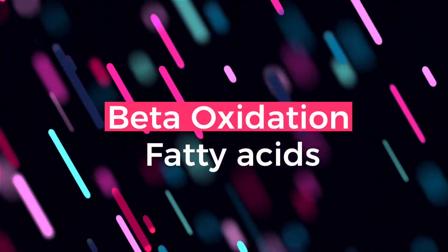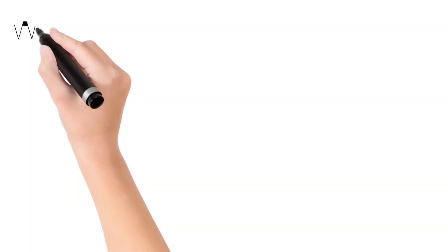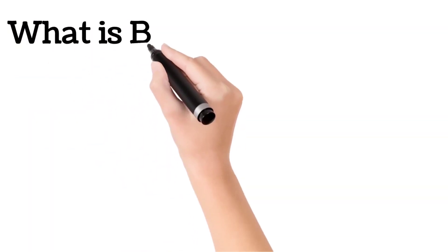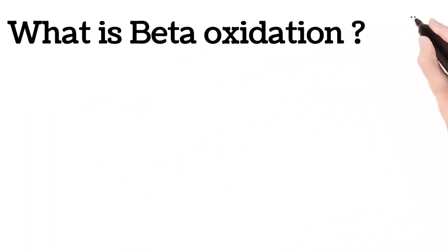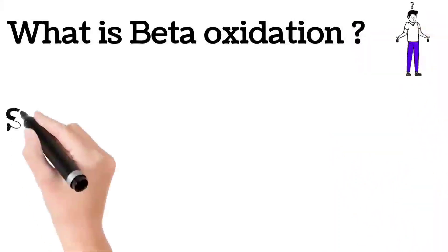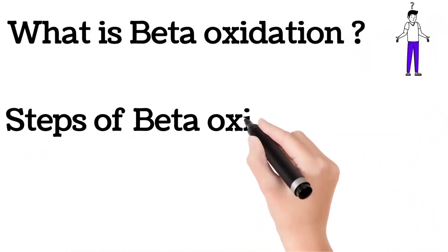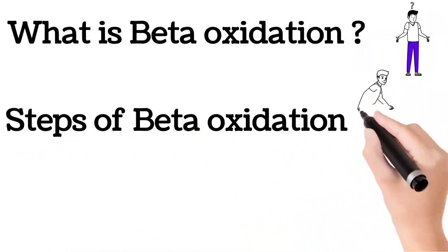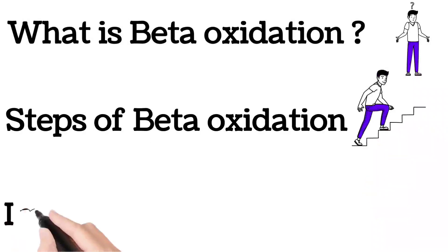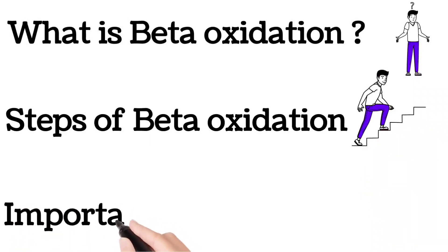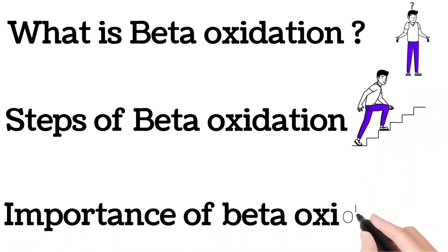Hello everyone, welcome to my channel Biochemistry Concepts. Today's video is about beta oxidation of fatty acids. In this we'll discuss why it is named as beta oxidation of fatty acids, what are the steps of beta oxidation, and what is the importance of this particular pathway.